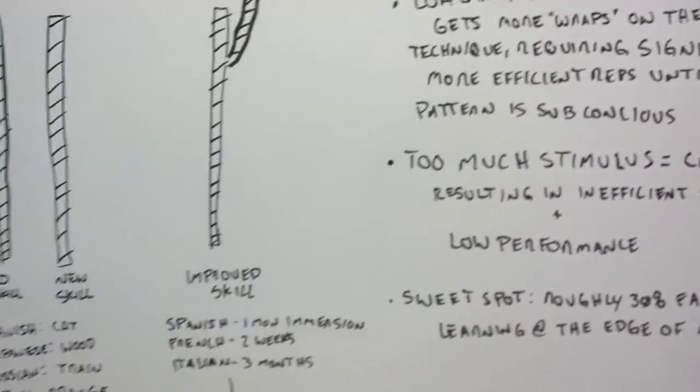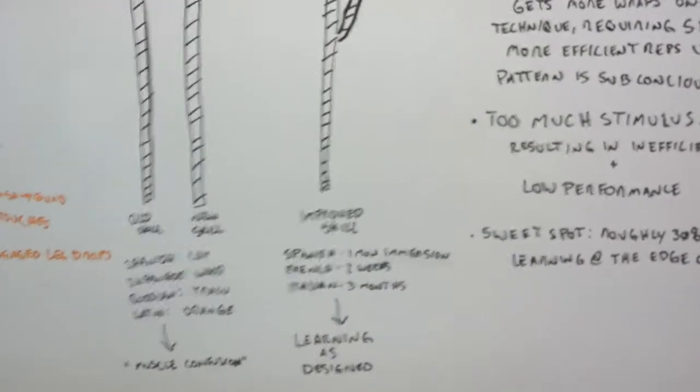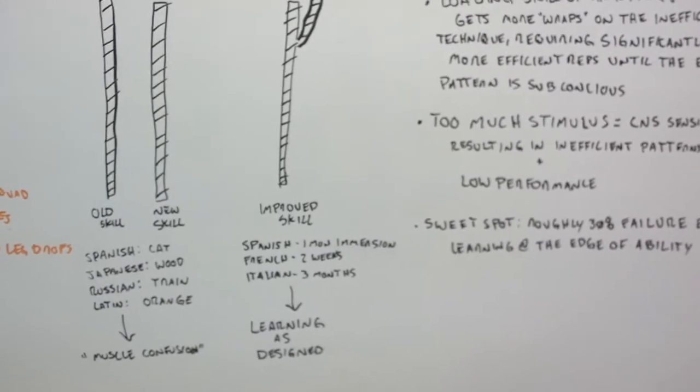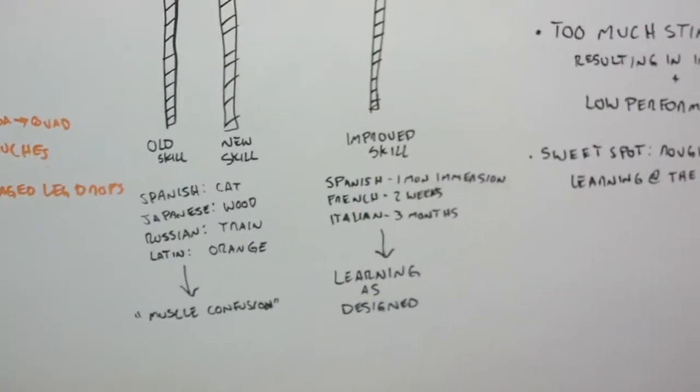Skills on these, it doesn't matter if it's a language, if it's art, if it's learning to play the piano, or if it's a squat. We're going to use language here as kind of an example of why muscle confusion is complete bullshit.